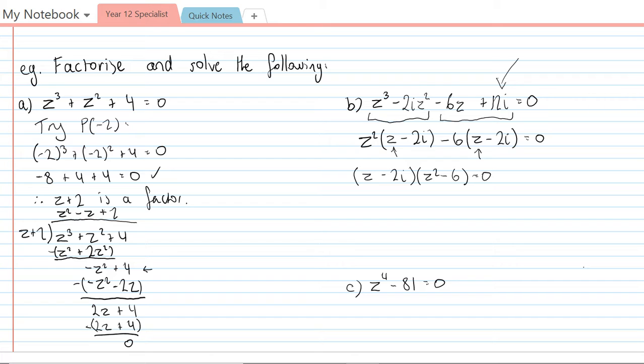So the last thing is then to factorise the quadratic part of this by using the difference of two squares. We've got z minus 2i, we've also got z plus root 6 and z minus root 6.